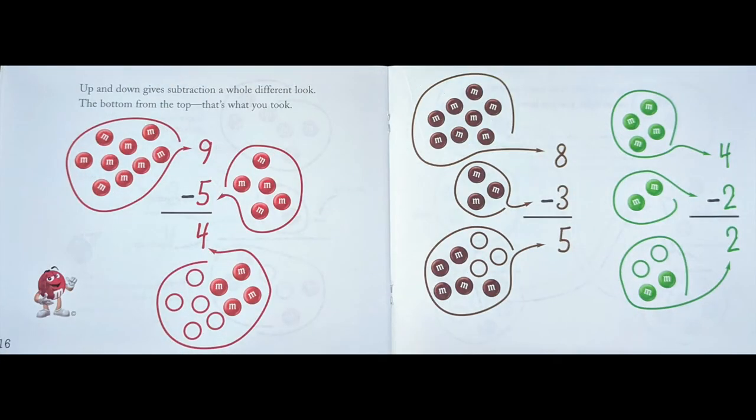Up and down gives subtraction a whole different look. The bottom from the top, that's what you took. 9 - 5 = 4. 8 - 3 = 5. 4 - 2 = 2.